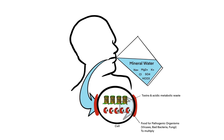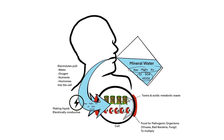Electrolytes are charged minerals that are balanced with a positively charged mineral such as sodium, magnesium, and potassium, and a negatively charged mineral complex such as chloride, sulfate, and carbonate — in such a way that they dissolve and split in water, making the liquid electrically conductive. This electrical conductivity is needed to pull water, oxygen, nutrients, and hormones into the cells.